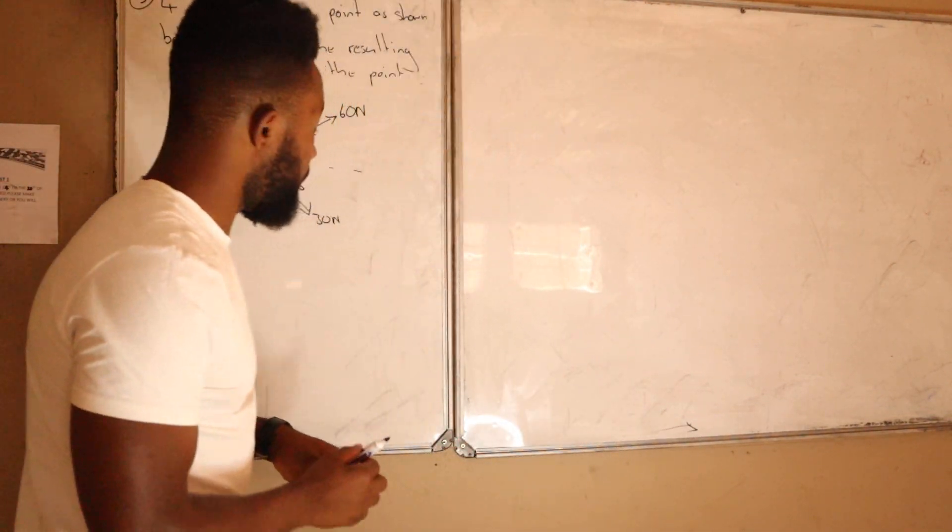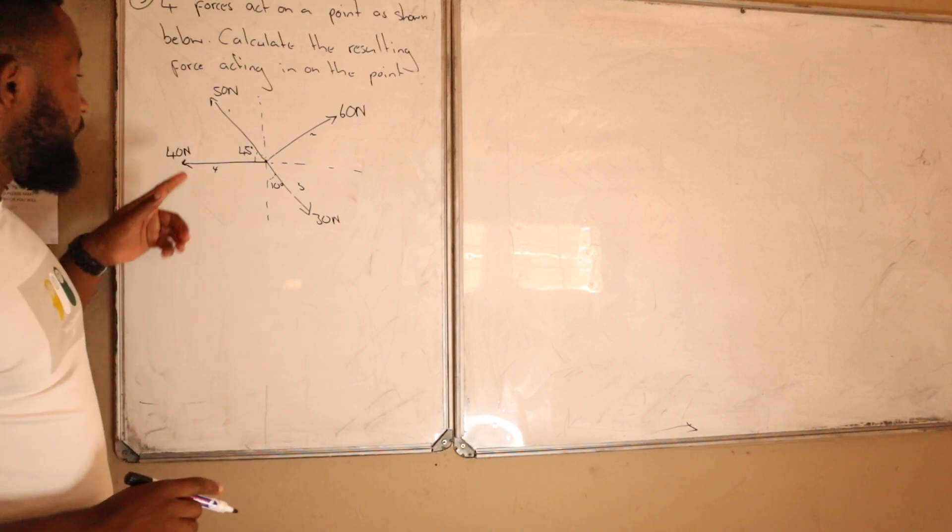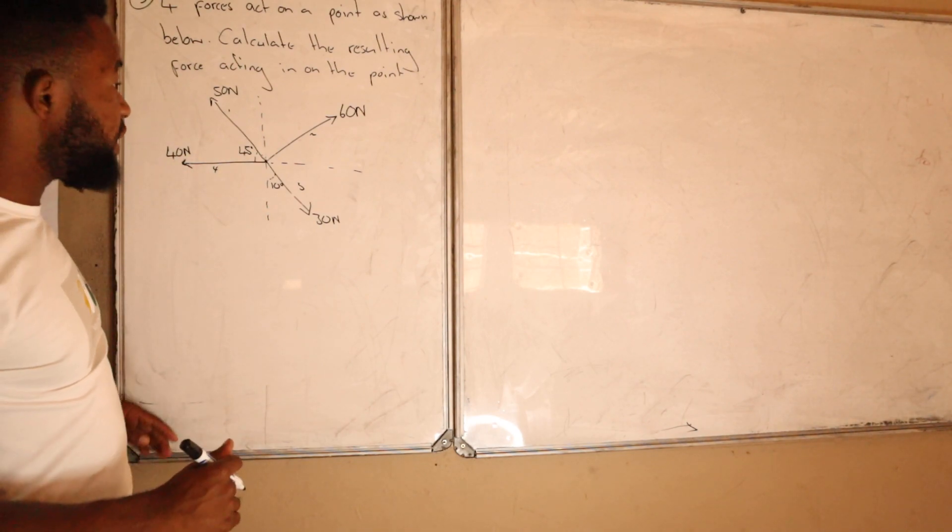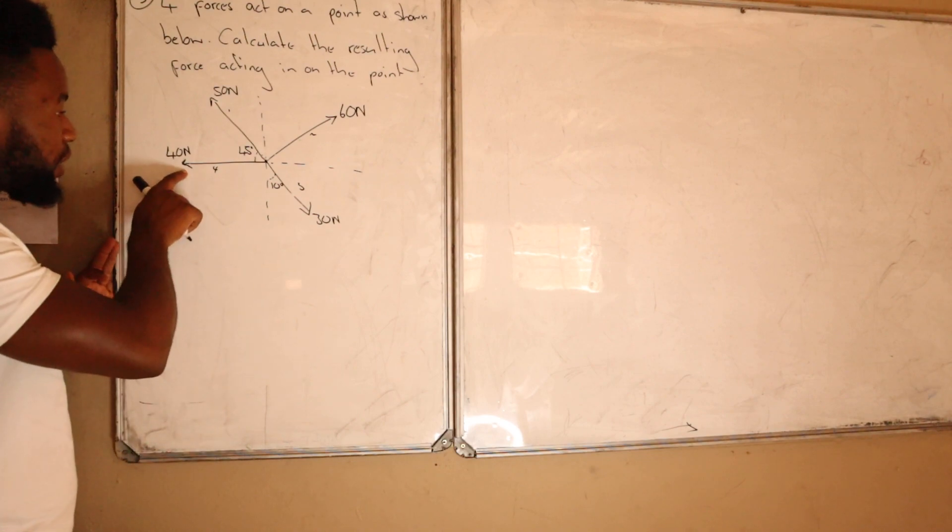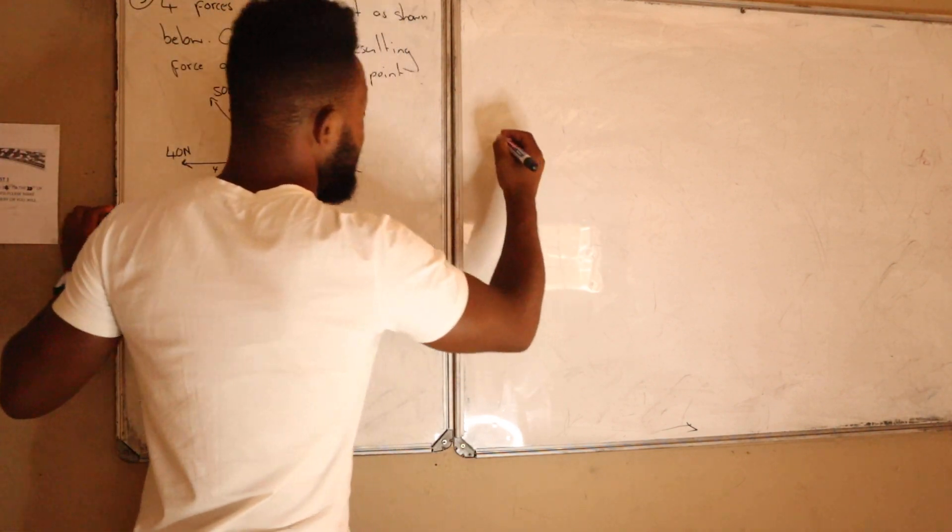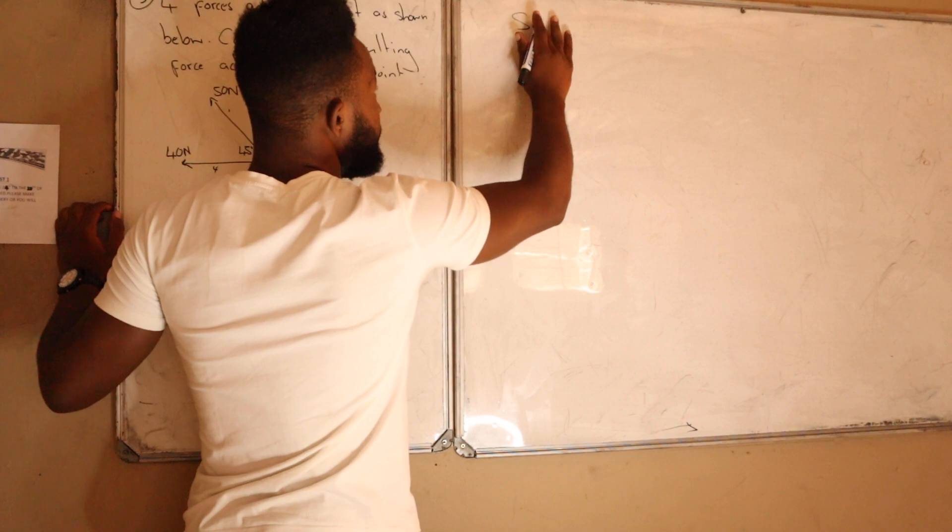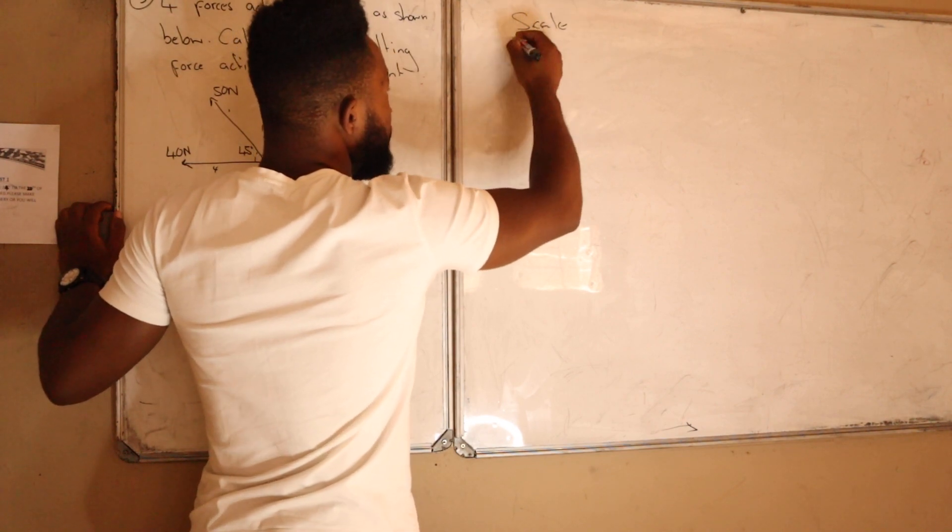Alright, so since we've been given four forces, you can draw it in any orientation. For me, I'm going to start with the horizontal force. Remember I said the first thing that you need is a scale. Here I can use the scale of one millimeter equals one Newton.